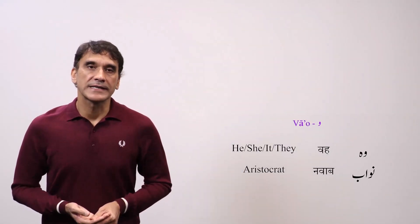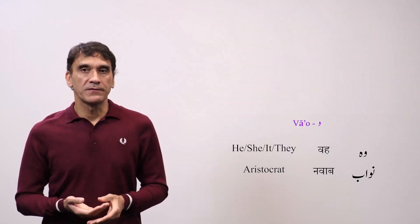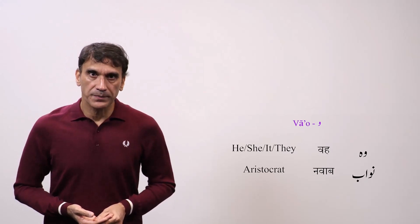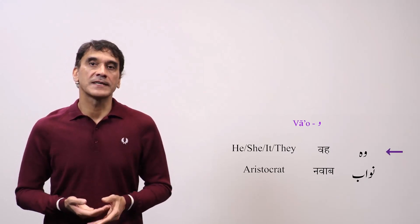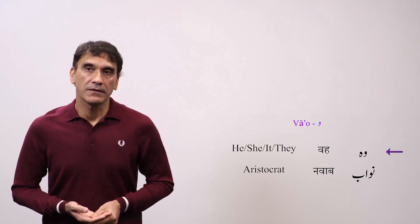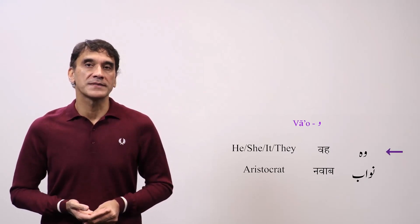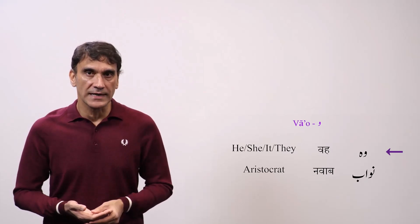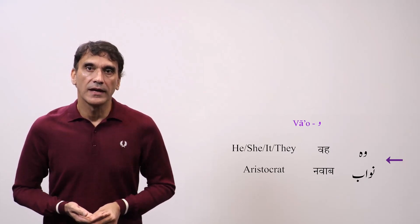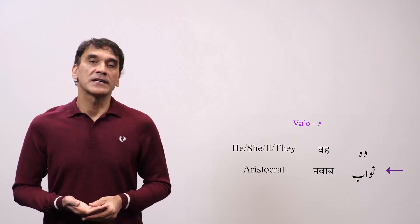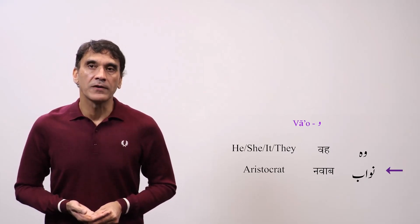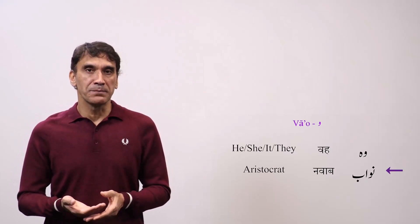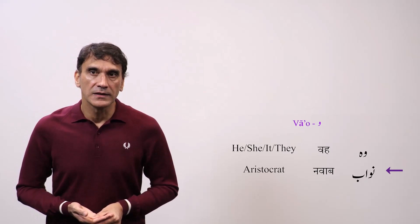Here are the two words with vav. The first one is 'vah,' where vav comes as the first and also as the detached letter. And the second one is 'nawab,' where vav comes as the medial letter, which is the same as the final.